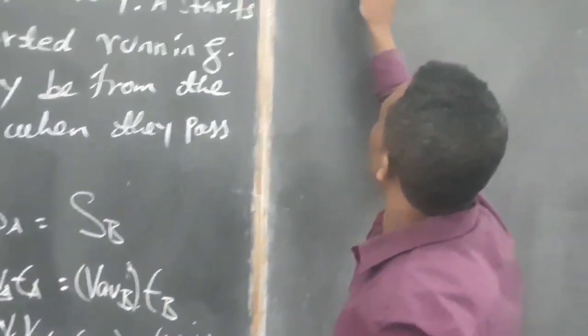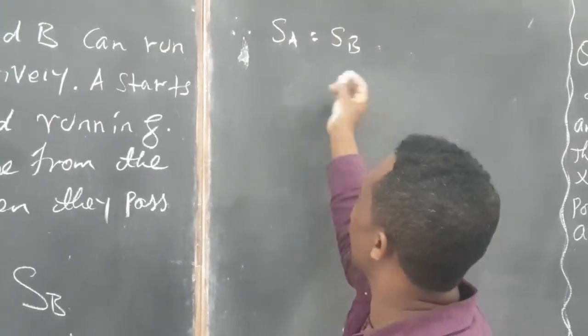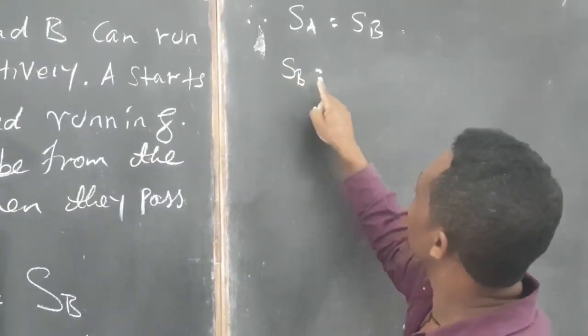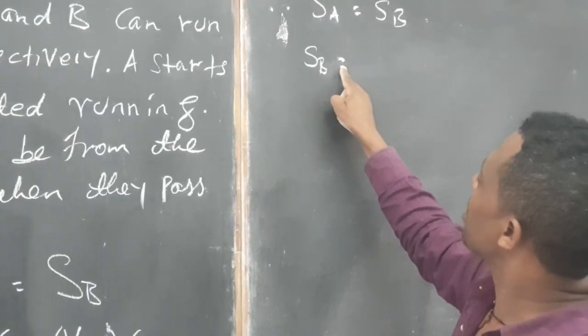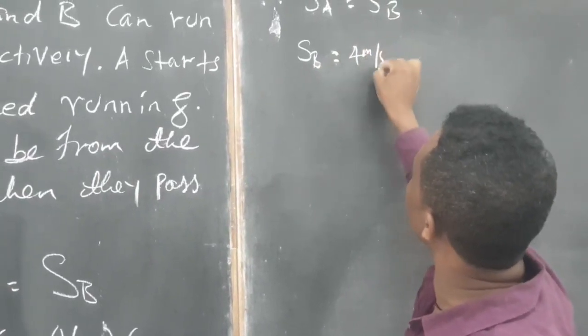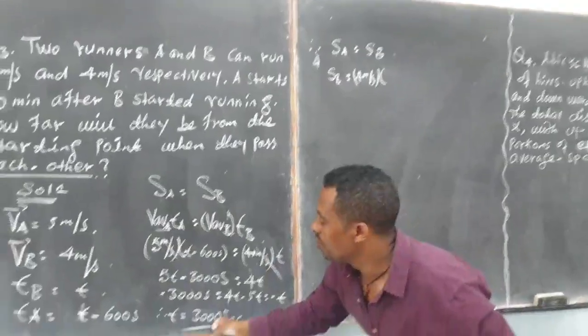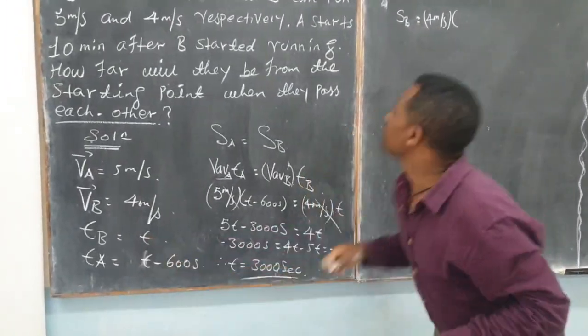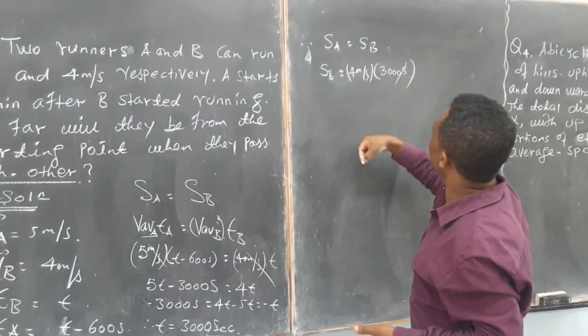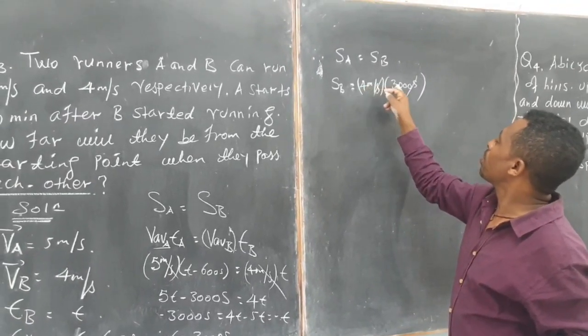Therefore, S of B is equal to—it means S of B means simply the velocity or the instantaneous or the average velocity of object B, that is 4 m per second. And then, already we found the time for runner B which is 3000 seconds. Right? Second by second cancel. And then, just multiply 4 m by 3000.